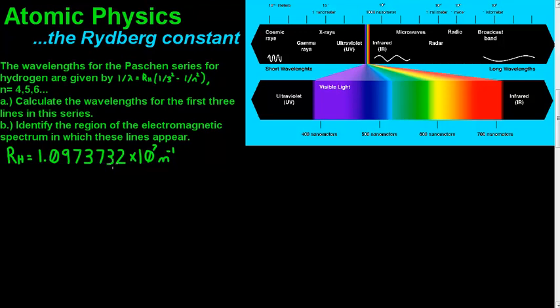In this problem, the wavelengths for the Paschen series for hydrogen are given by 1 divided by wavelength equals Rh, or the Rydberg constant, multiplied by 1 divided by 3 squared minus 1 divided by n squared, with n equaling 4, 5, and 6. Calculate the wavelengths for the first three lines in the series and identify the region of the electromagnetic spectrum in which these lines appear.